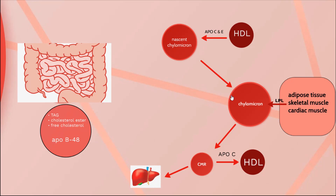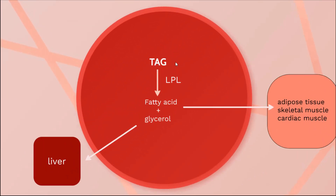As the chylomicron passes through the circulation, APO C2 in the chylomicron activates the lipoprotein lipase enzyme, which is situated at the capillary wall of peripheral tissues — especially adipose tissue, skeletal muscle, and cardiac muscle. This lipoprotein lipase enters into the chylomicron and degrades the triacylglycerol into fatty acids and glycerol.